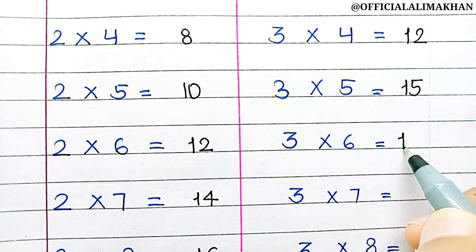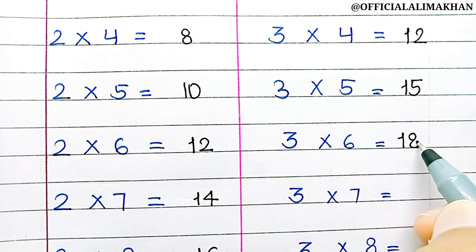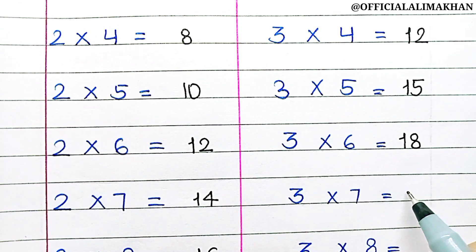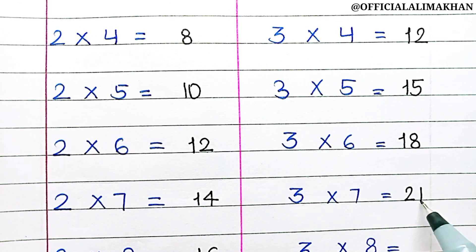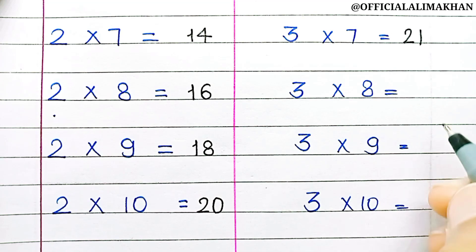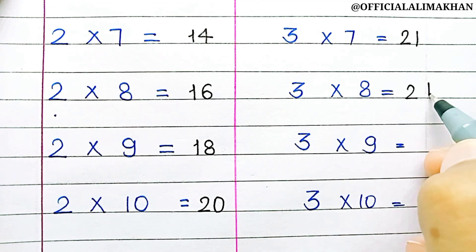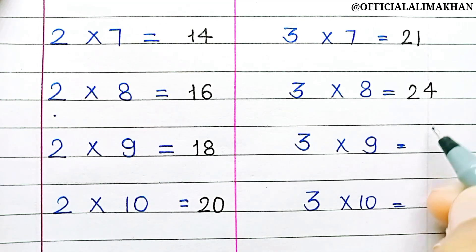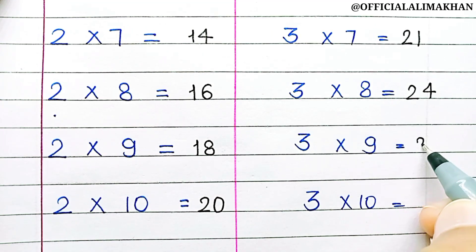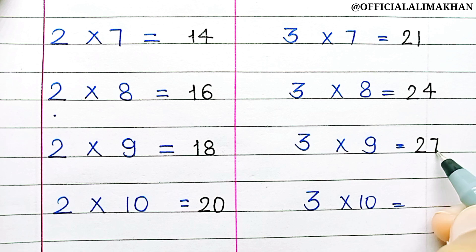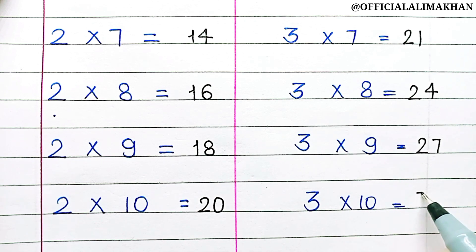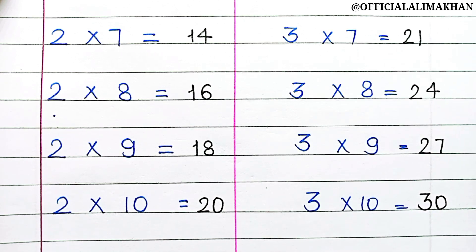3 6s are 18, 3 7s are 21, 3 8s are 24, 3 9s are 27, 3 10s are 30.